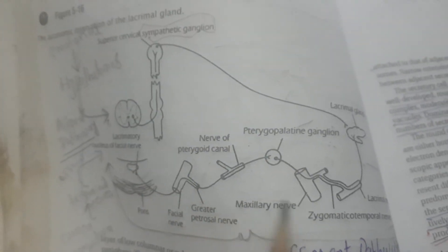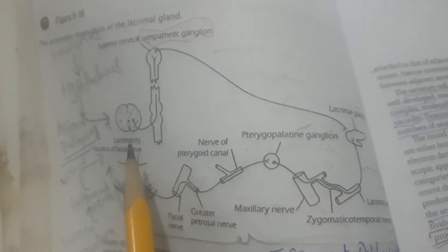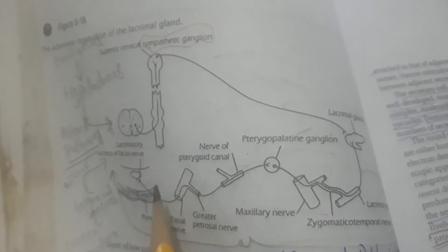There is a sympathetic pathway of the lacrimal gland which is present on the superior cervical sympathetic ganglion. There is also a parasympathetic pathway, which consists of different passages passing into the lacrimal gland to show secretomotor function.